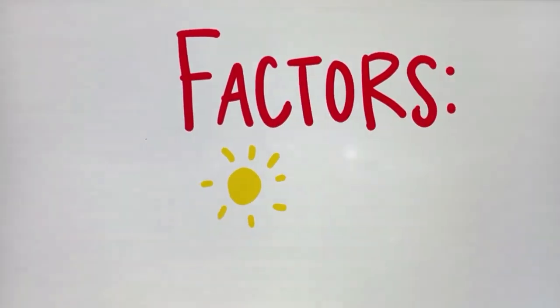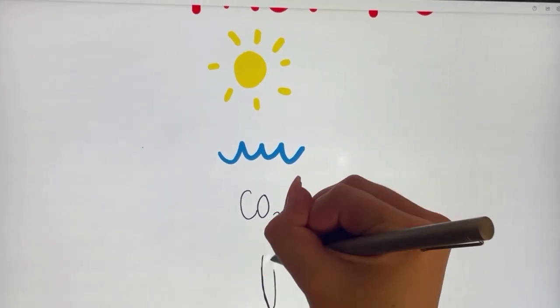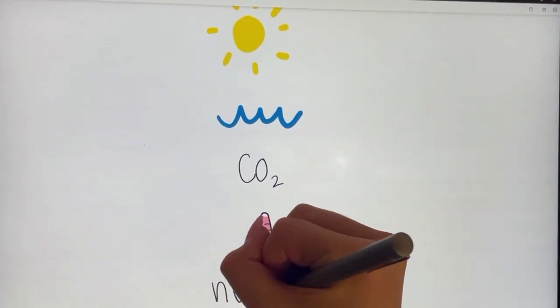Some factors that impact photosynthesis include light availability, water, carbon dioxide, temperature, availability of nutrients, and chlorophyll content.